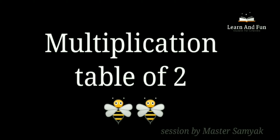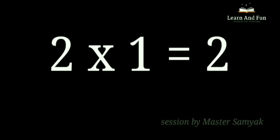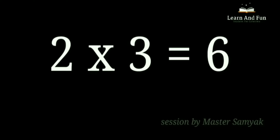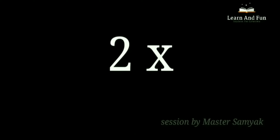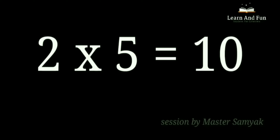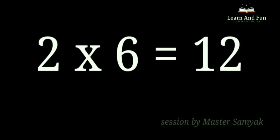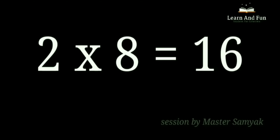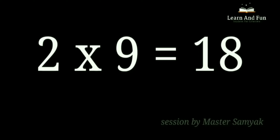Multiplication Table of 2. 2 one is 2. 2 twos are 4. 2 threes are 6. 2 fours are 8. 2 fives are 10. 2 sixes are 12. 2 sevens are 14. 2 eights are 16. 2 nines are 18. 2 tens are 20.